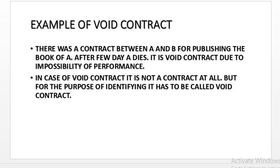Example of a void contract: there was a contract between A and B for publishing the book of A. After a few days, A dies. So it is a void contract because A is no more and it is impossible to perform. In case of a void contract, it is not a contract at all, but for the purpose of identifying it, it is called void contract. Void contract means which was initially valid but later on becomes legally or physically impossible — it becomes void.